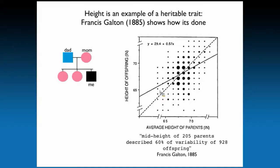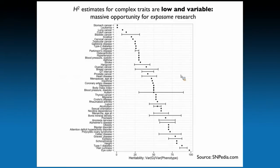This is the basis of how biostatistics started with Francis Galton in 1885. He took families, ascertained the height of parents and their offspring, and found a strong correlation between the two. He concluded that the mid-height of 205 parents described 60 percent of the variability in 928 offspring — summarized in the coefficient for the average height of parents.